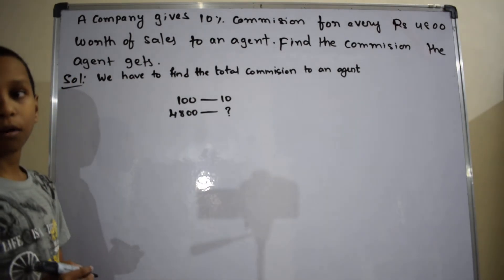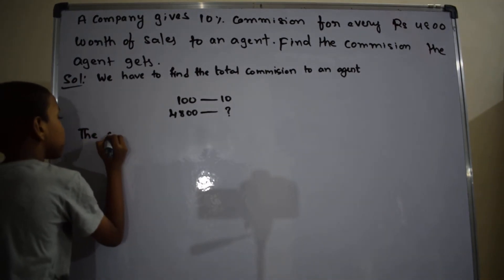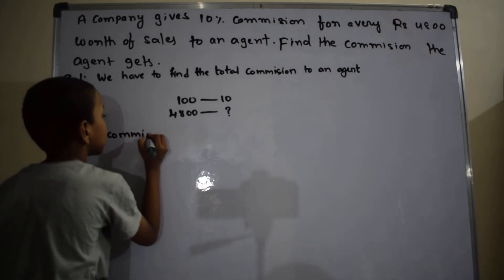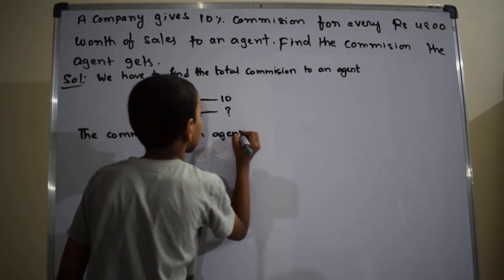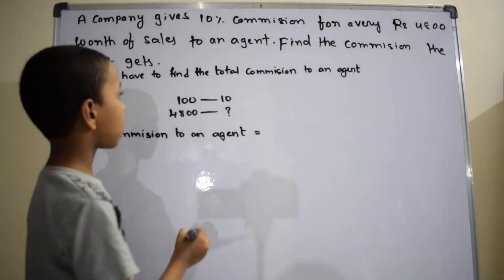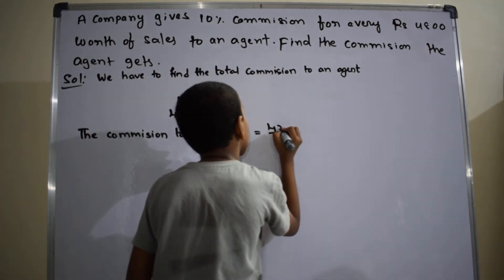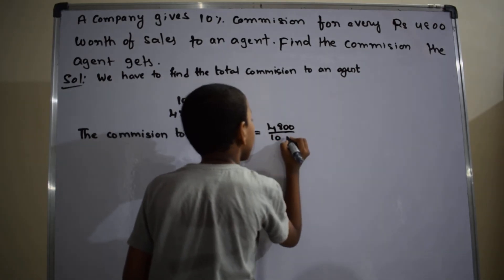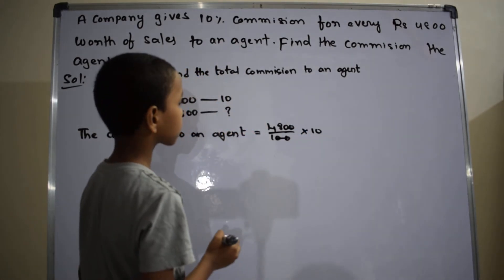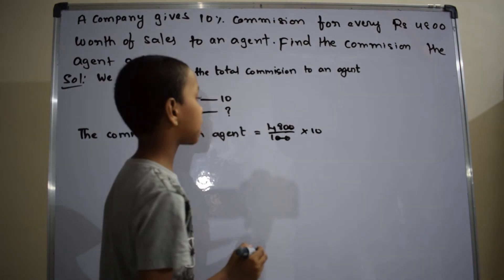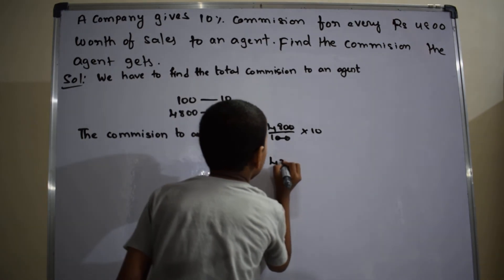The commission of an agent equals 4800 divided by 100, into 10. These two zeros and these two zeros get cancelled. So 48 into 10 equals 480. 480 divided by 1 equals 480.